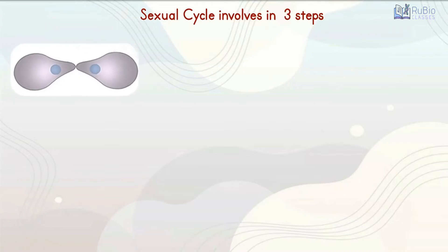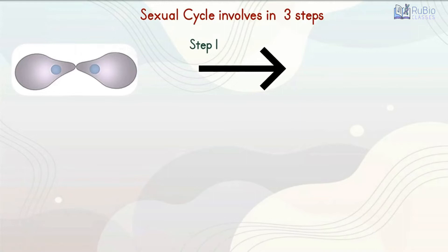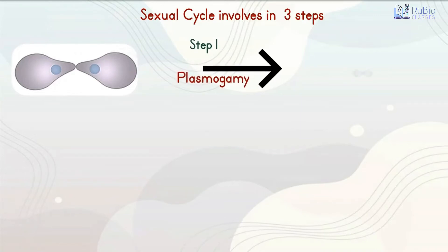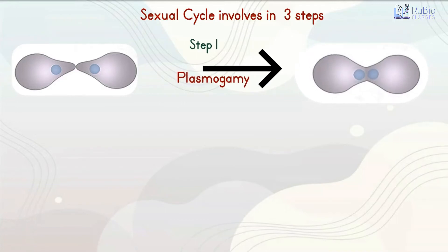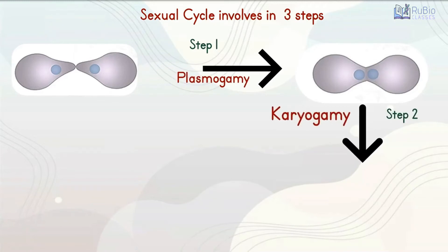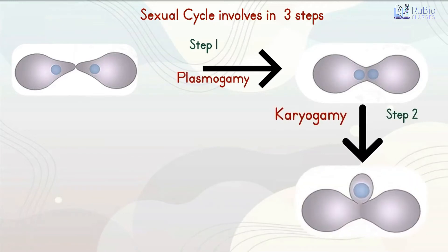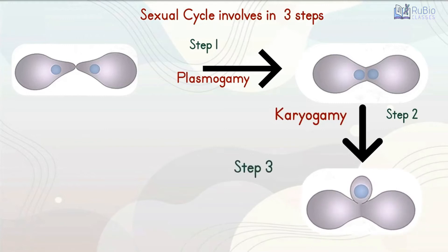First, the protoplasms of the motile male and non-motile female gamete fuse by a process called plasmogamy. During this fusion, the two nuclei fuse together by karyogamy. Finally, the resulting zygote forms haploid spores by meiosis.